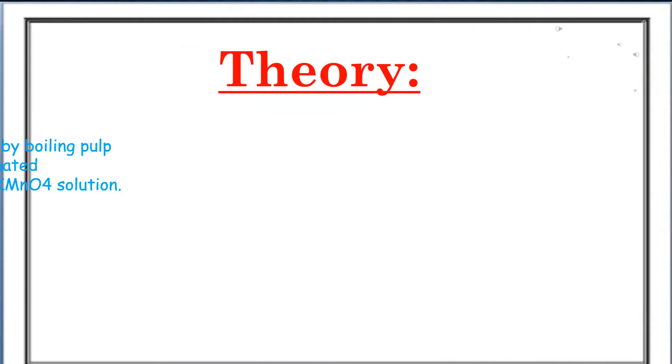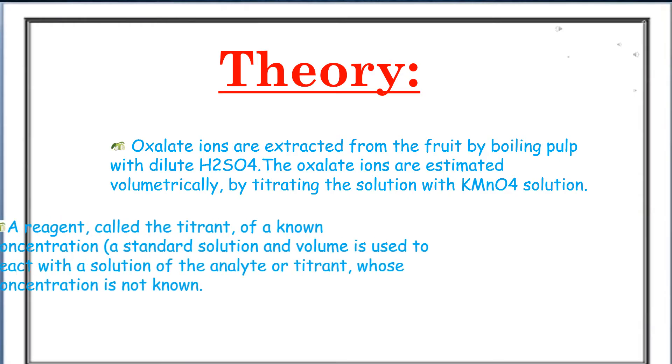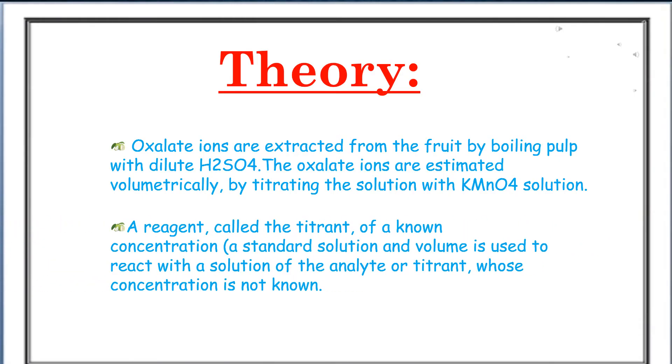Theory: Oxalate ions are extracted from the fruit by boiling pulp with dilute sulfuric acid. The oxalate ions are estimated volumetrically by titrating the solution with potassium permanganate solution.